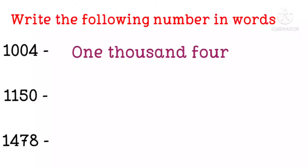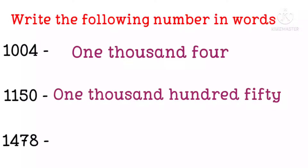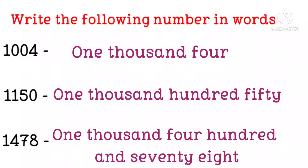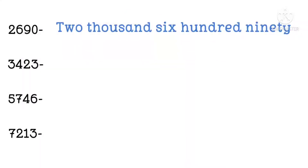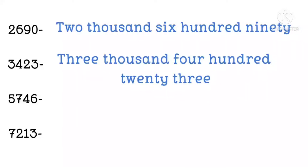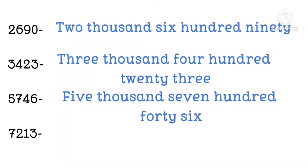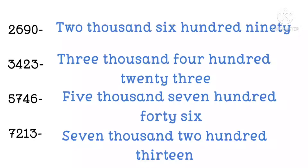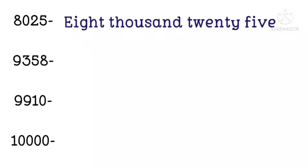Next one is one thousand one hundred and fifty. Then one thousand four hundred and seventy-eight. Then two thousand six hundred and ninety. Three thousand four hundred and twenty-three. Five thousand seven hundred and forty-six. Seven thousand two hundred and thirteen. Next number is eight thousand and twenty-five.